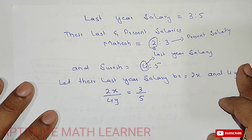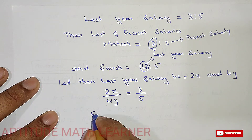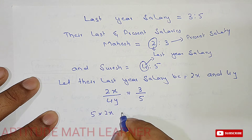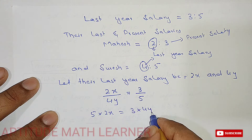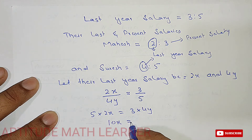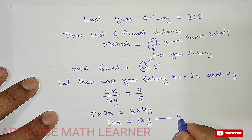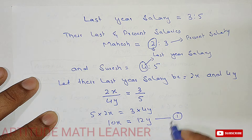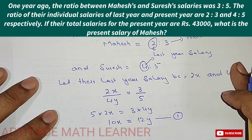Cross multiplying: 5 × 2x = 3 × 4y, which gives us 10x = 12y. We take this as Equation 1.